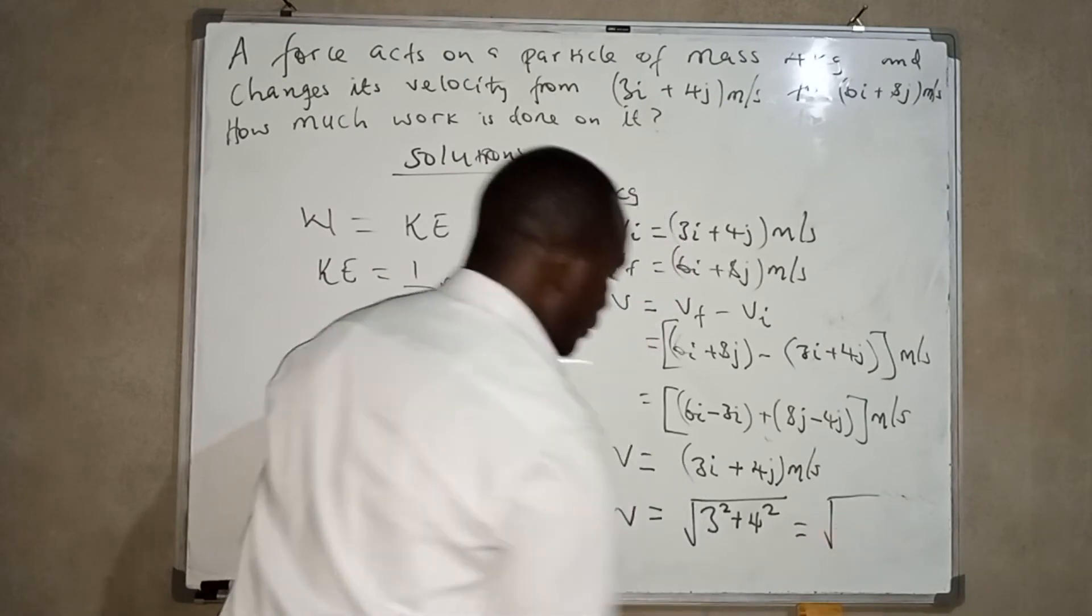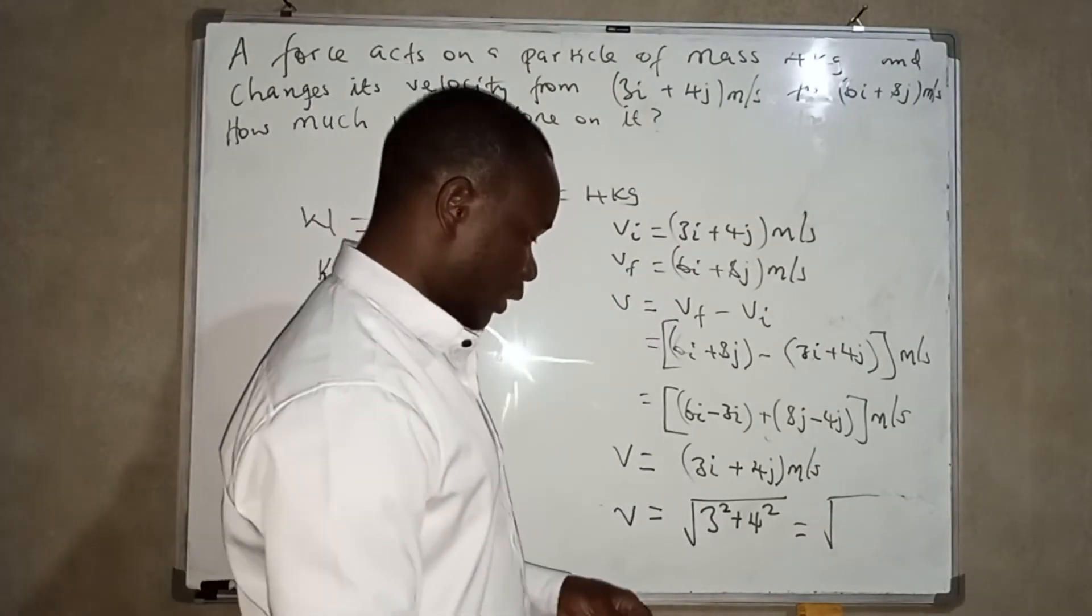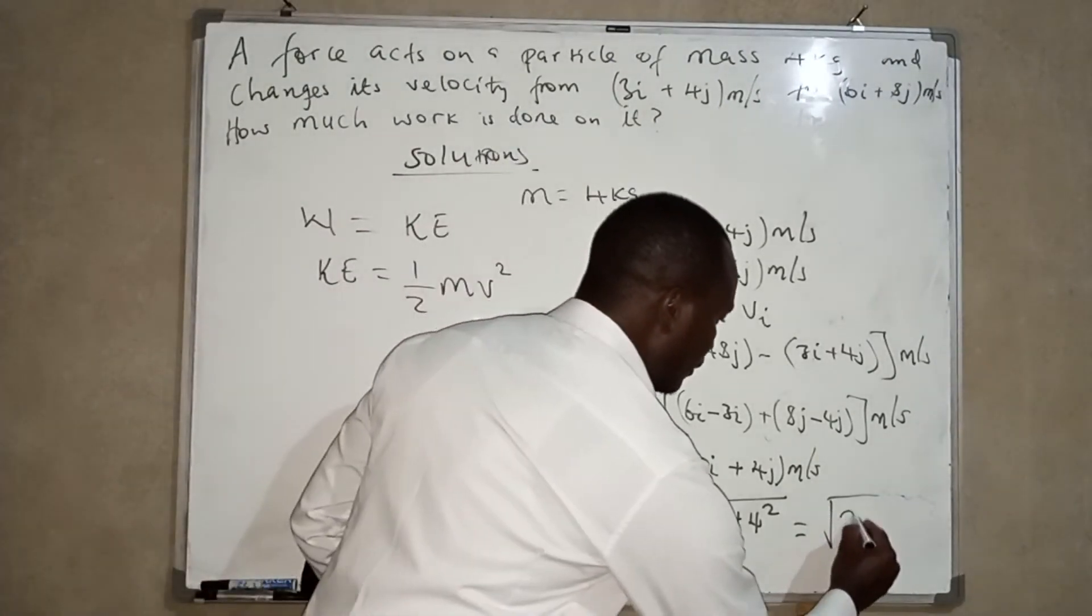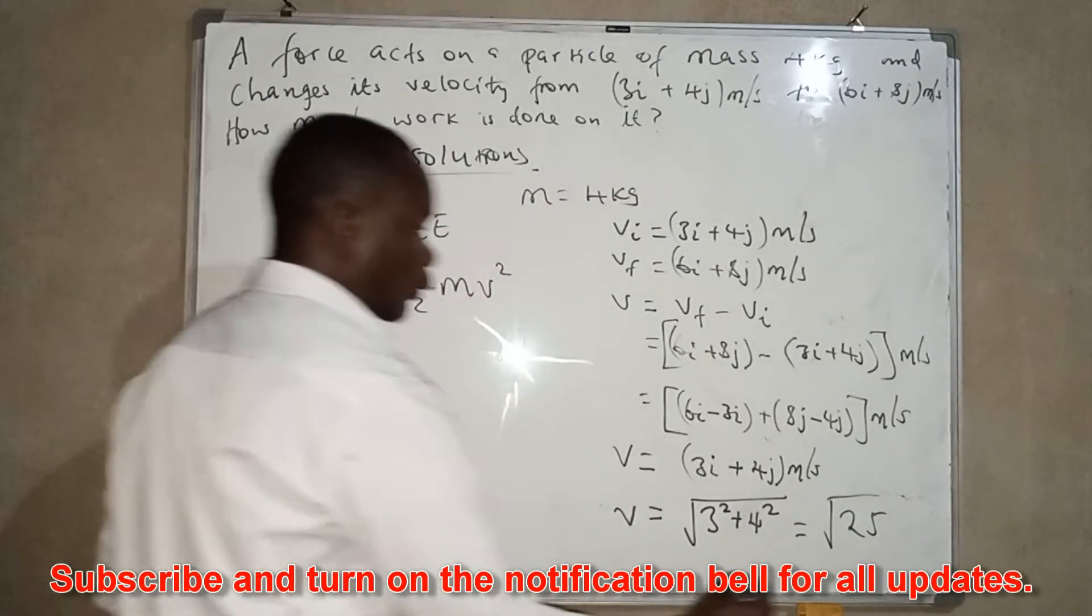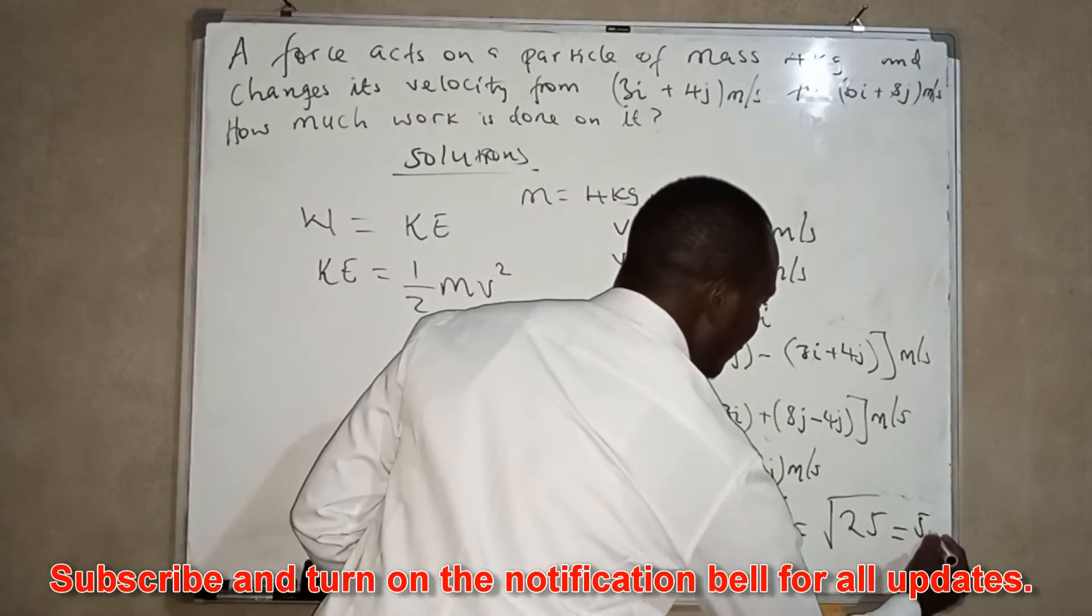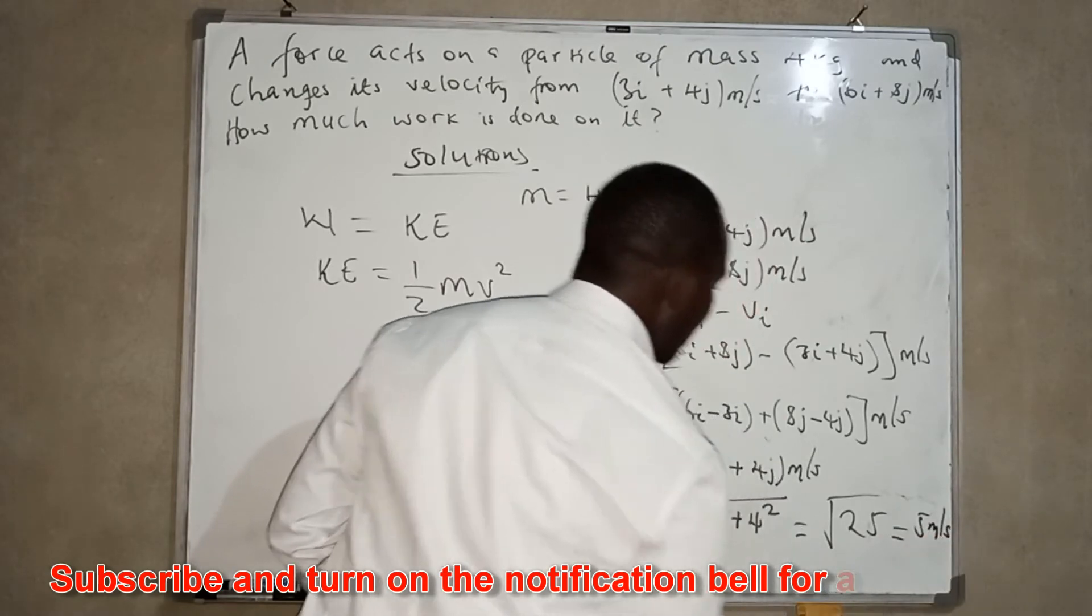Which is going to give us 3 squared is 9, 4 squared is 16, so 16 plus 9, we're going to have 25 there, and square root of 25 is 5. So units meters per second.